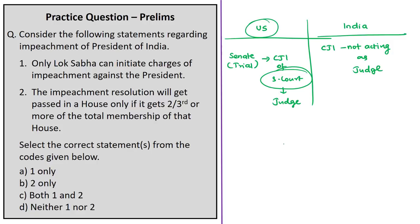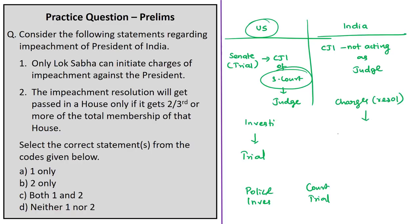In the United States, there is investigation in the first House and trial in the second House — almost like a criminal case where police investigate and the court conducts the trial. Whereas in India, the first House frames and prefers charges against the president as a resolution, and the second House investigates, where the president has the right to appear. If passed with two-thirds majority of the total membership, the president stands removed from the date the resolution is passed in the second House.